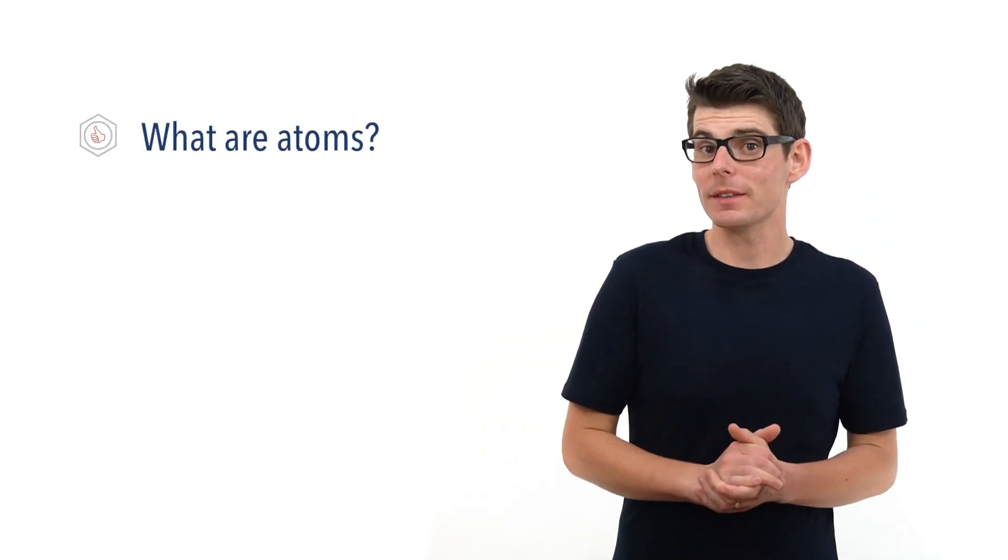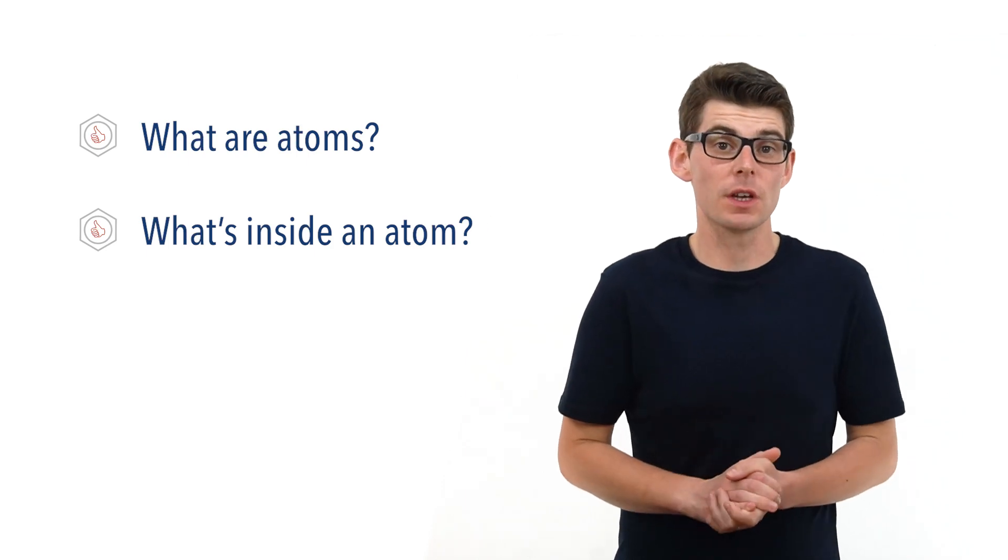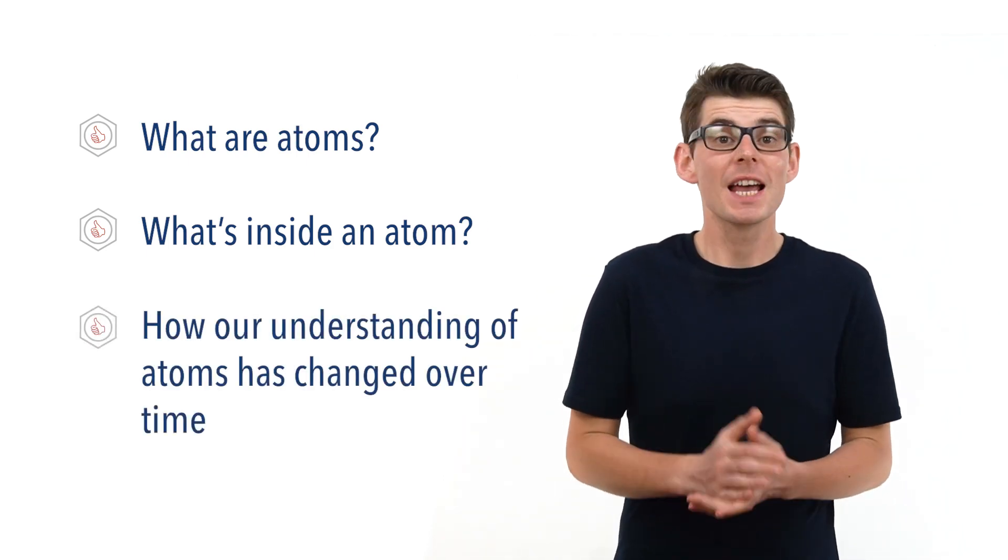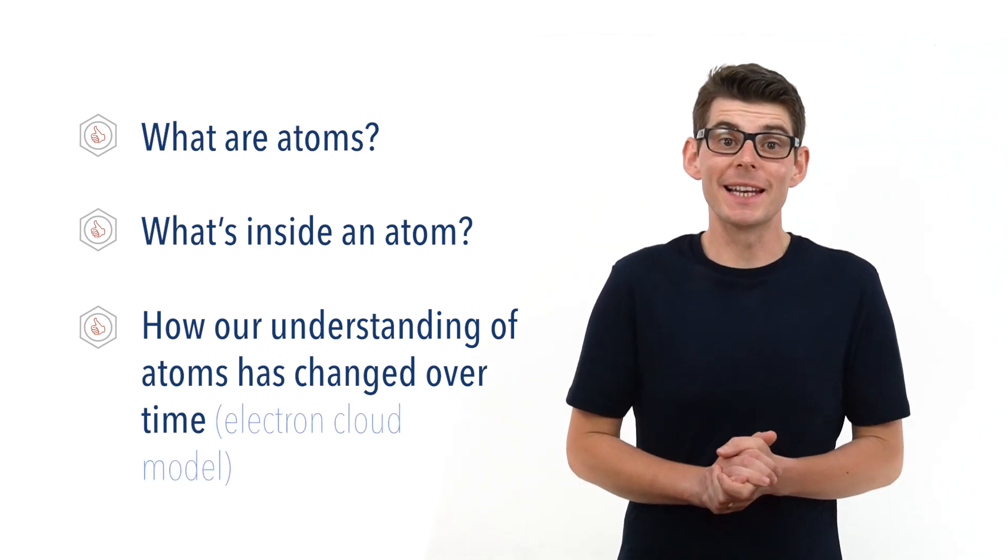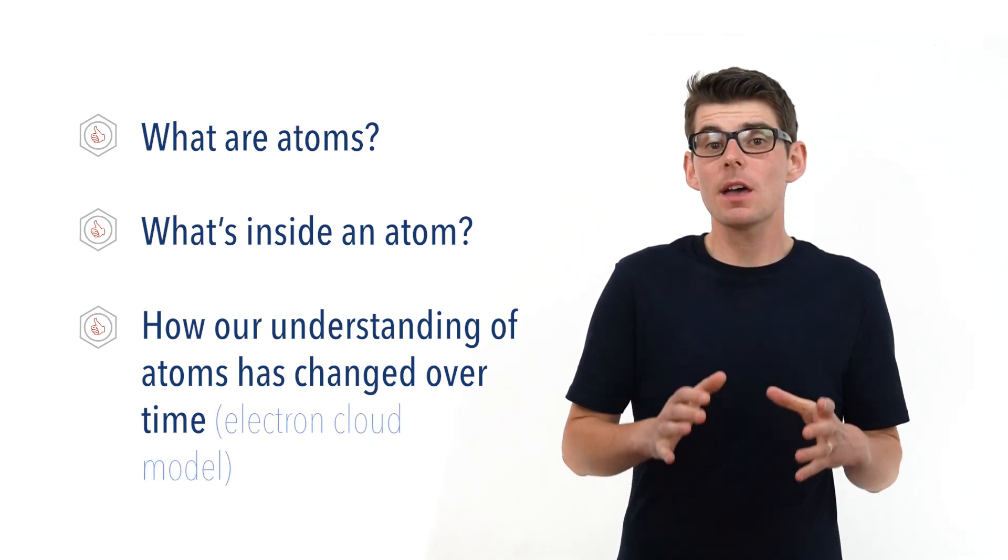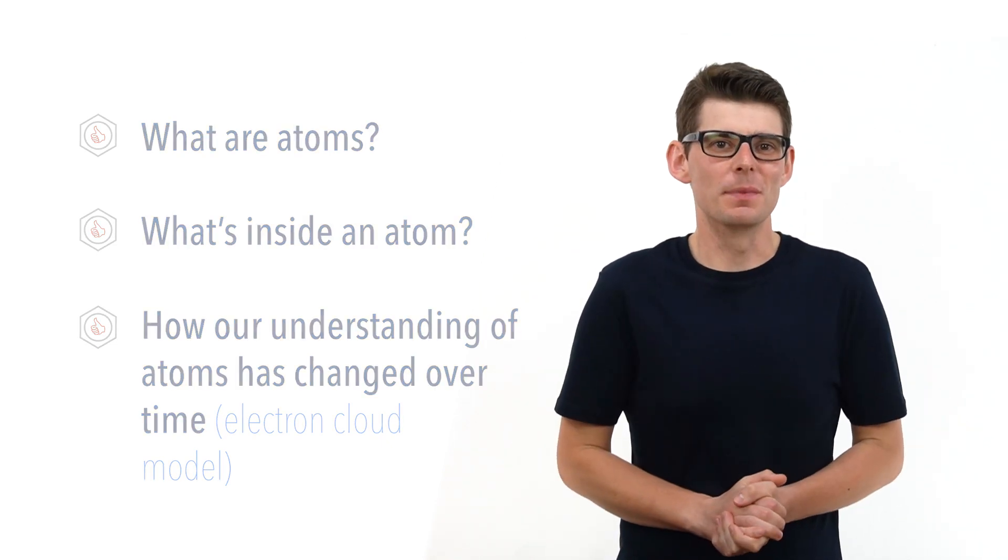We're going to talk about what atoms are, what makes up an atom, and how our understanding of atoms has changed over time, leading to our current electron cloud model. Atomic orbitals and electron configurations have been covered in much more detail in separate videos. Check the links in the description below.